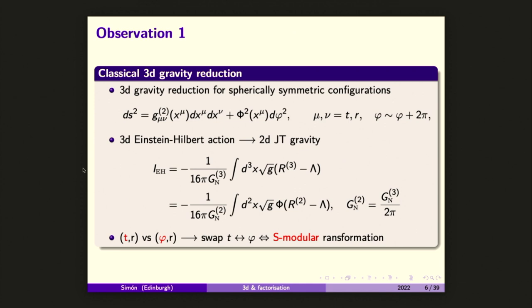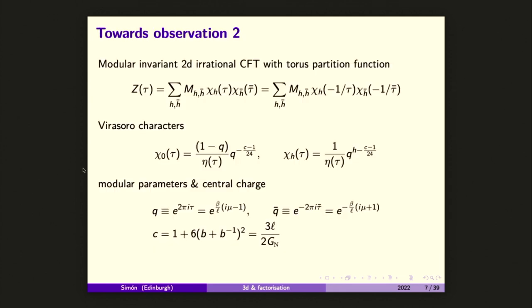Some results in the literature, like in the Cotler-Jensen analysis of 3D reparametrizations, suggest that modular transformations in the CFT that swap the role of the time cycle with the spatial cycle are going to play a role. Now I'm switching gears and using AdS-CFT notation from the boundary theory. Keep in mind a modular invariant irrational CFT with a sparse spectrum. This is my notation for the torus partition function, controlled by Virasoro characters — the vacuum one and the excited ones.